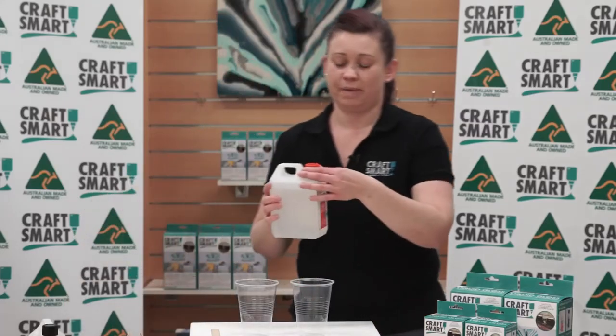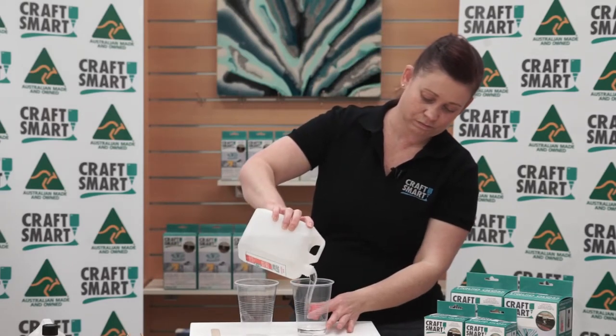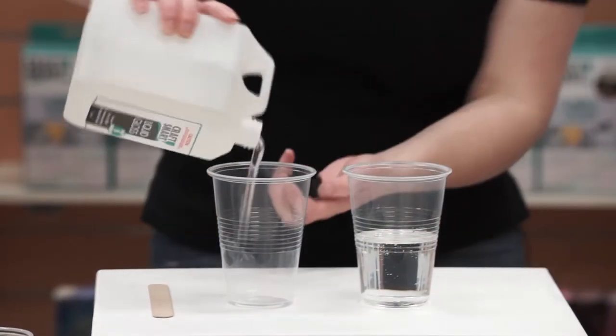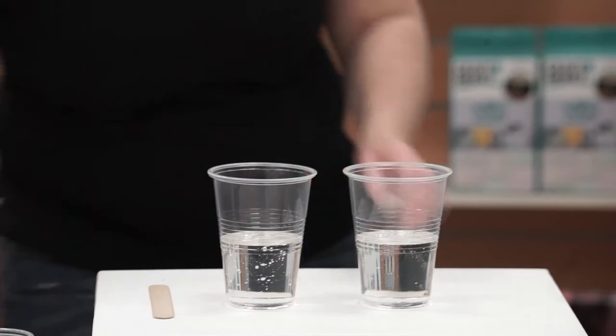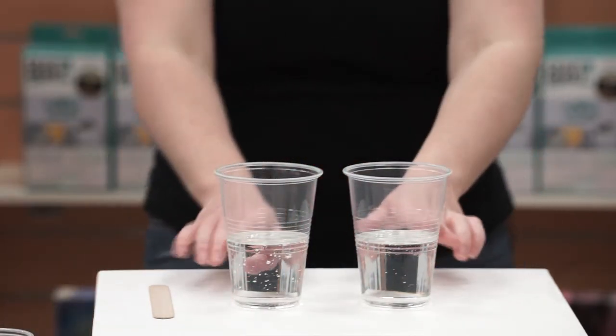We're going to pop Part A into our first cup, and equal amounts of Part B into our second cup, making sure that both cups are level and we have the equal amount.